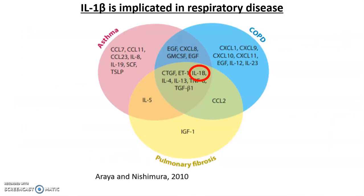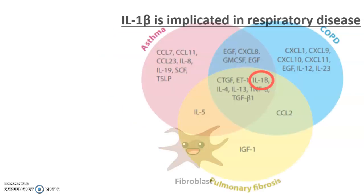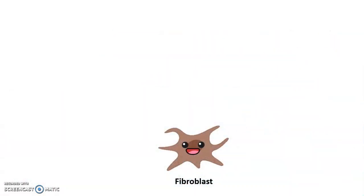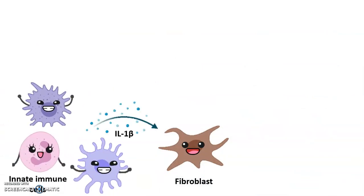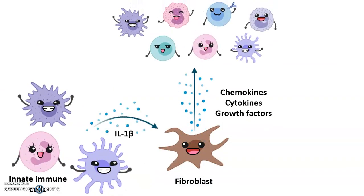There are numerous inflammatory mediators implicated in respiratory diseases, and many of these influence the trafficking of immune effector cells to the lung. IL-1 beta is an important pro-inflammatory cytokine produced by innate immune cells such as macrophages, and is a driver of immune cell recruitment and activation. Fibroblasts are stromal cells found throughout most tissues in the body, including in the lung, and respond to IL-1 beta by producing mediators which modify the quantity, quality, and duration of the inflammatory response.